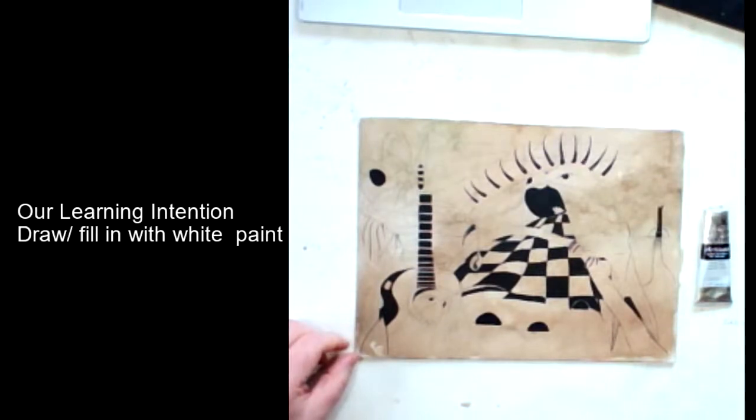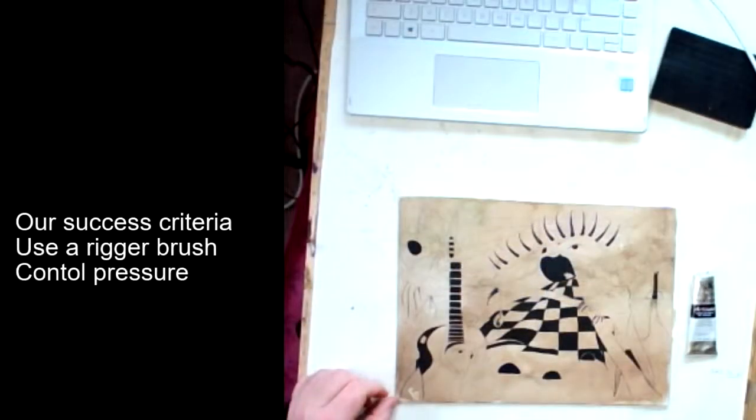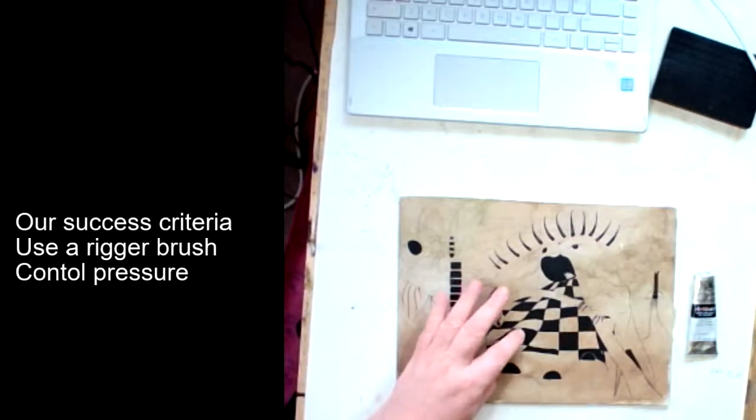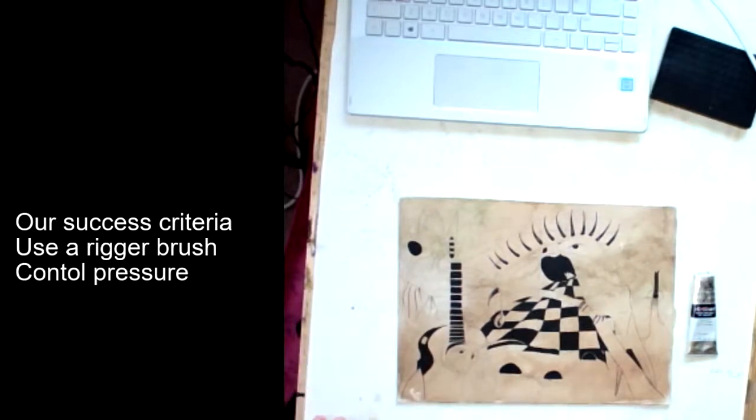How will we know if we've done a good job? If we look at our success criteria, we'll be able to use a rigger brush like we did with the black that we made with raw umber and French ultramarine blue, and we'll be able to make a nice crisp line.